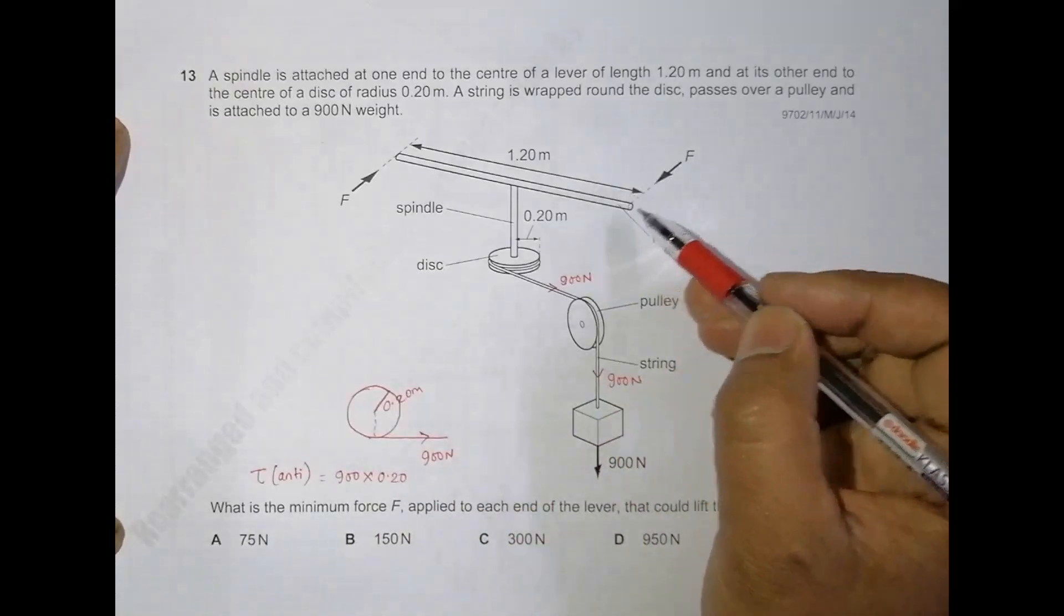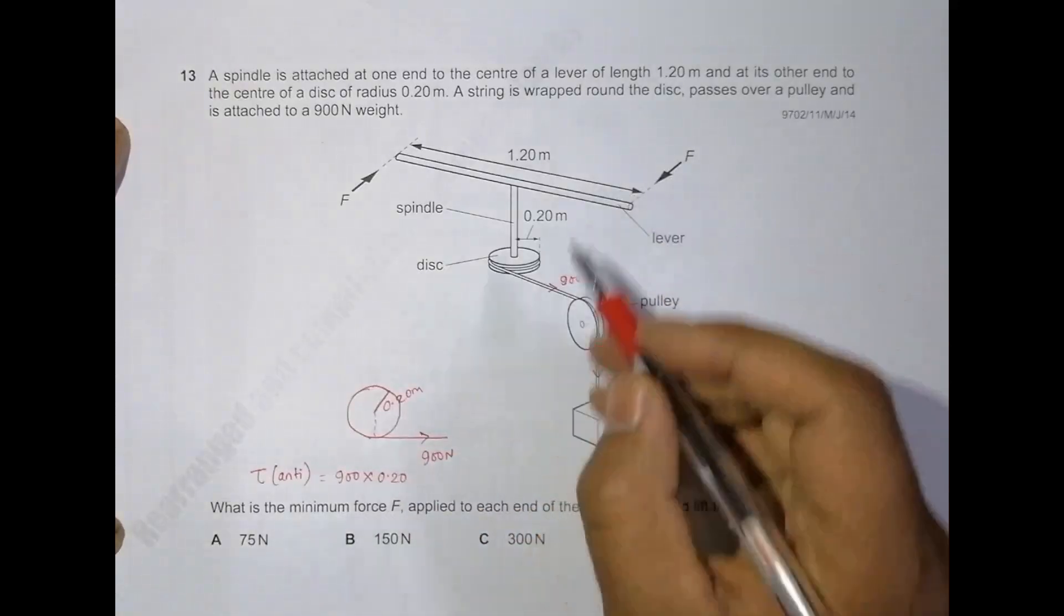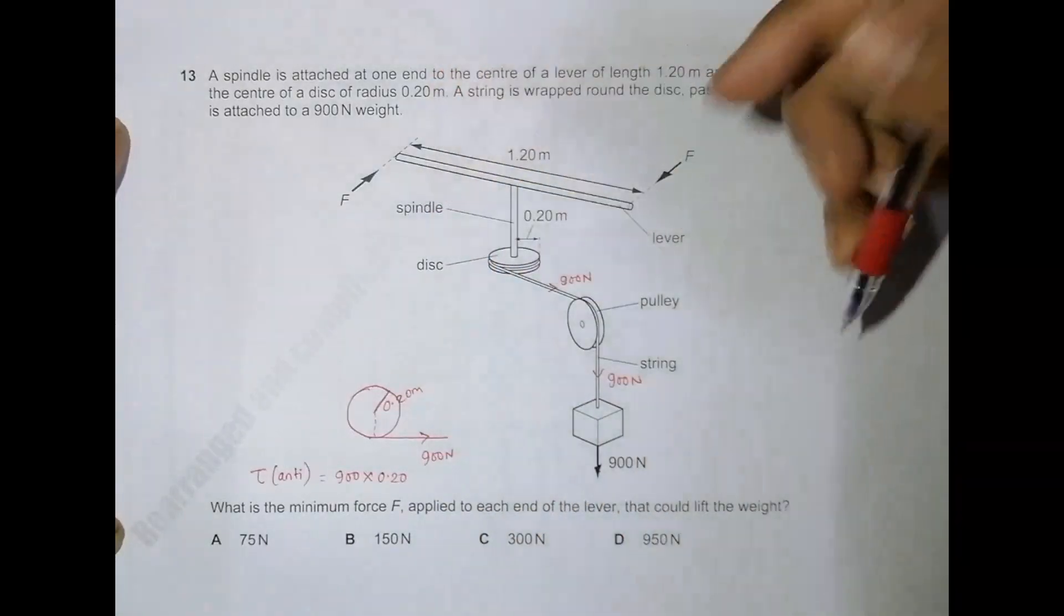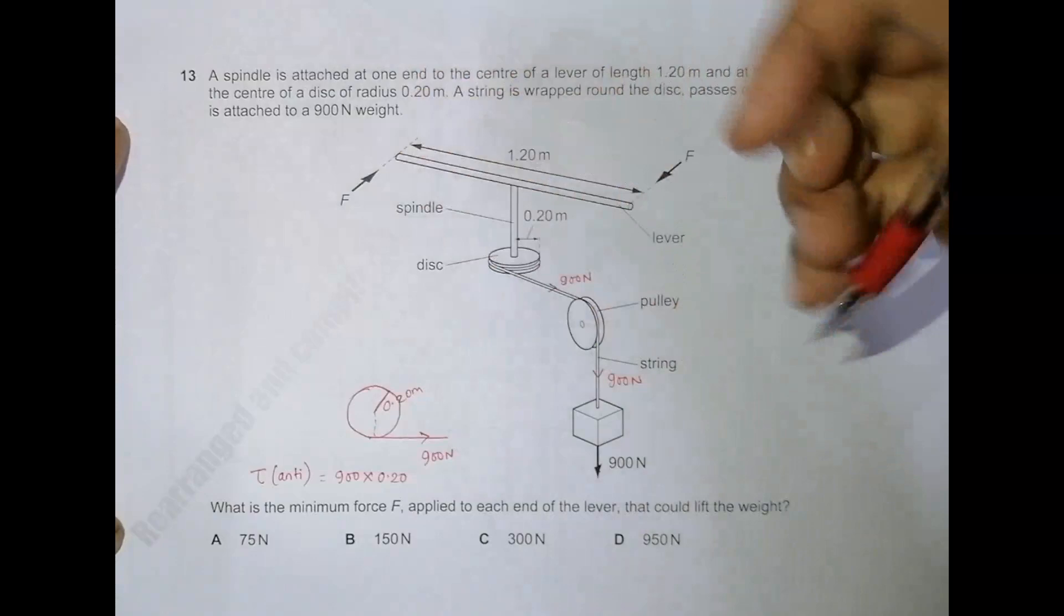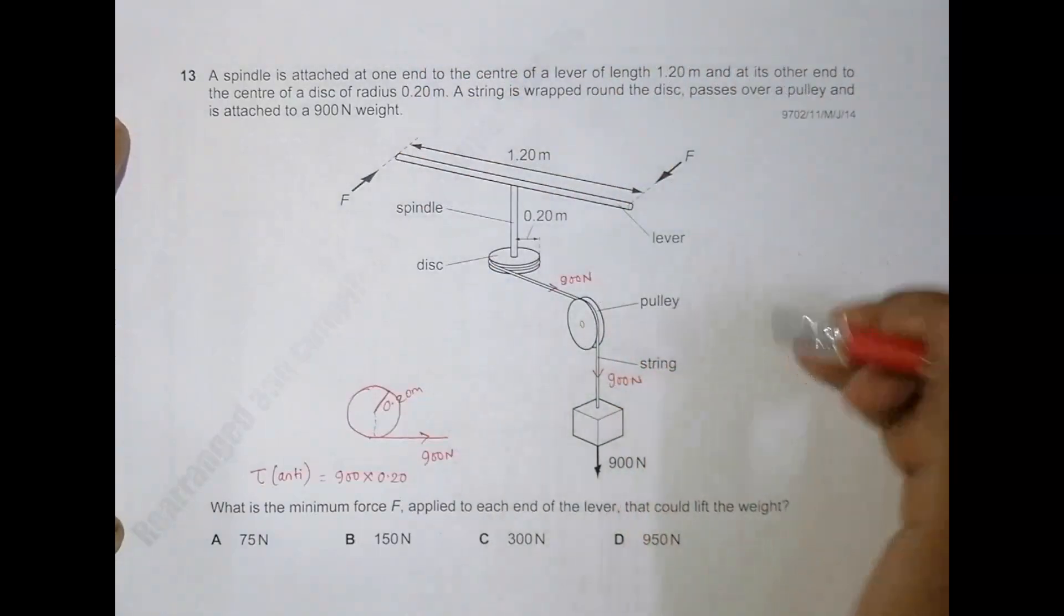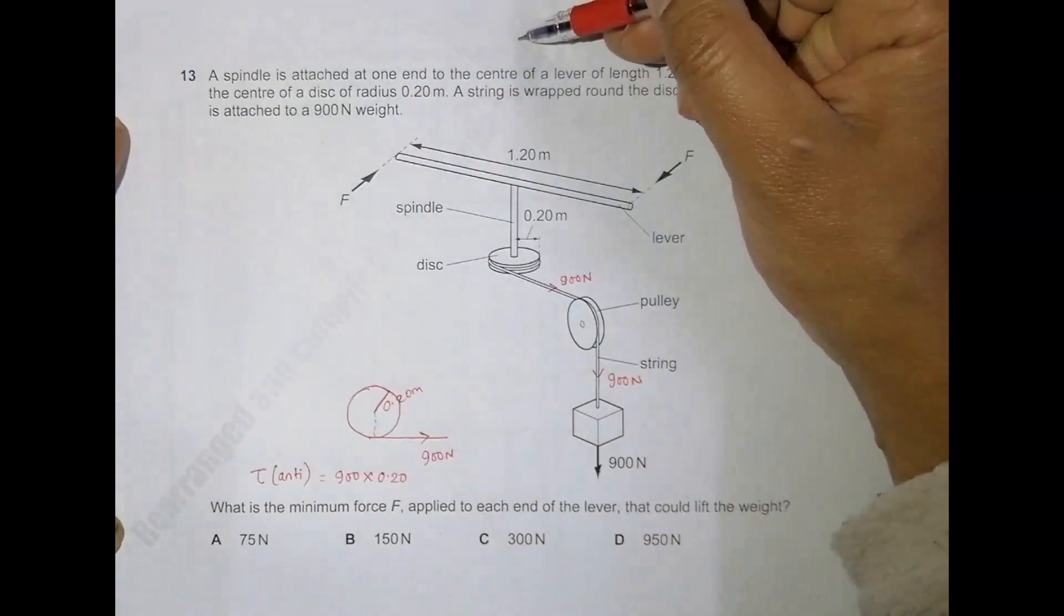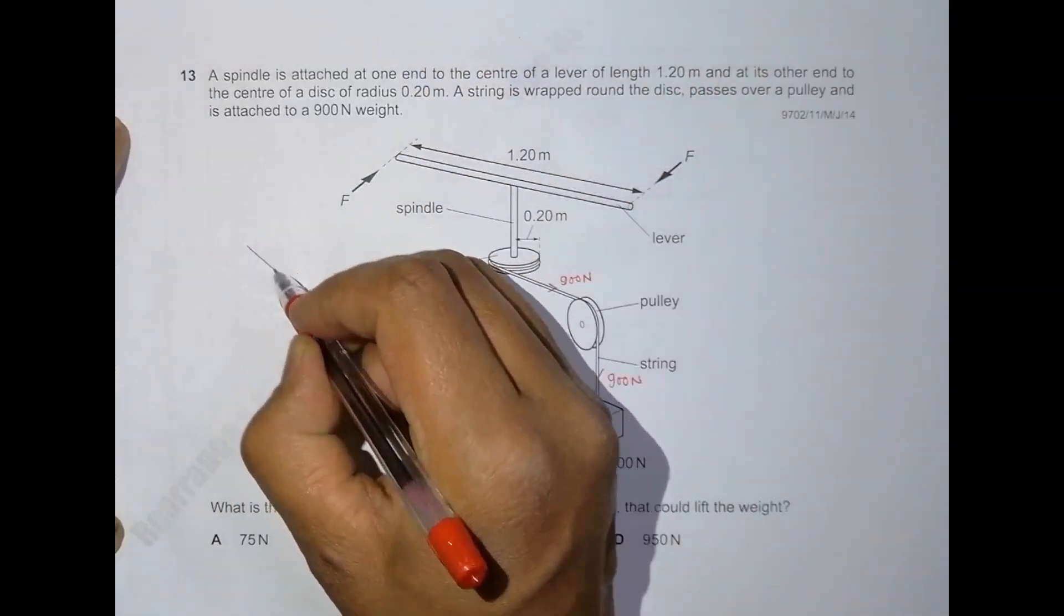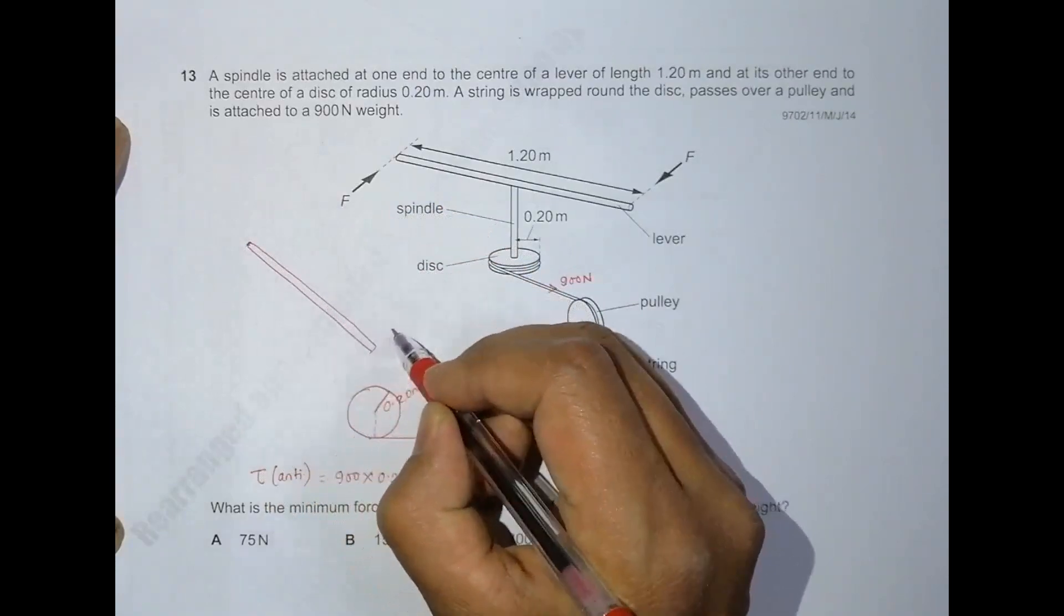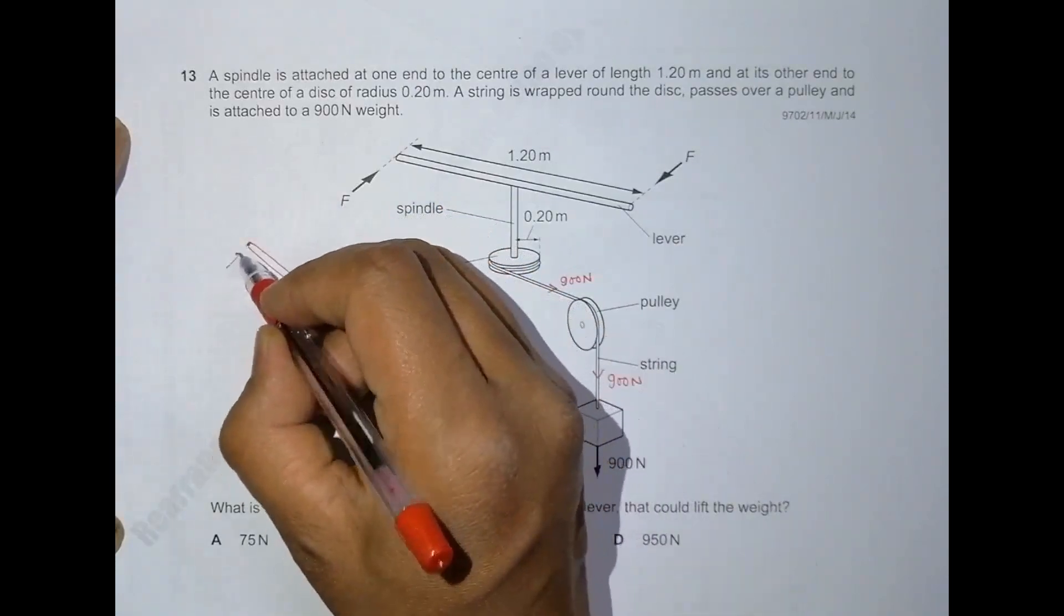Now the clockwise torque: if I look from above, this force and this force will try to rotate the thing like this, so it gives some clockwise torque. If you look from upward, the lever will be like this. I am applying force like this and force like this.